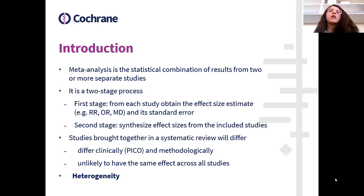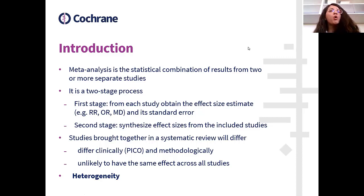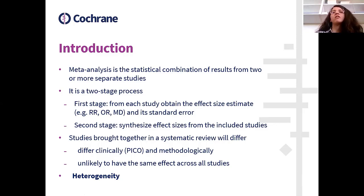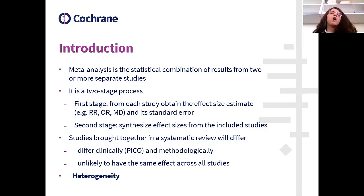During the first stage, we obtain the effect size estimate from each study and its corresponding standard error. During the second stage, we synthesize all the effect sizes from the included studies. Studies brought together in a systematic review will differ — clinically, meaning differences in PICO criteria, and methodologically. In practice, it is almost impossible to have the same effect across all studies. This is where the term heterogeneity is introduced.